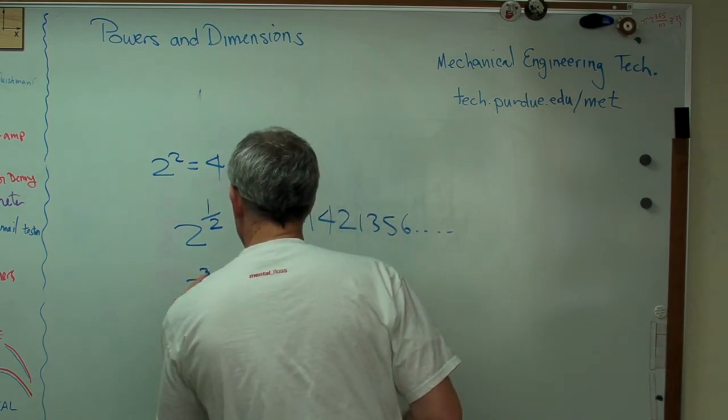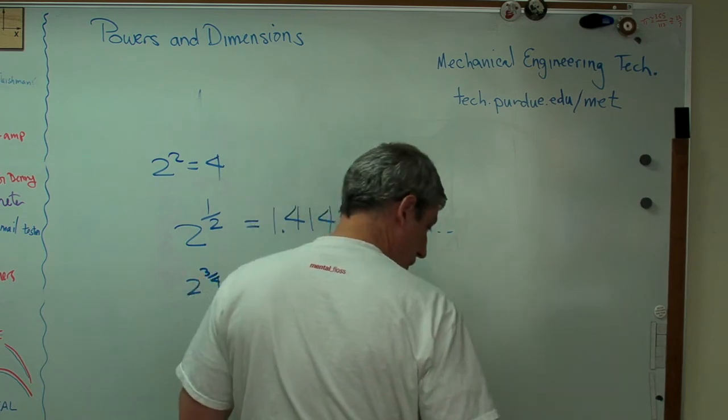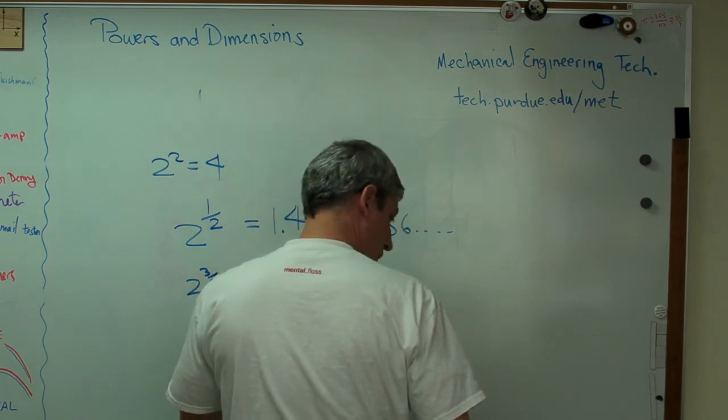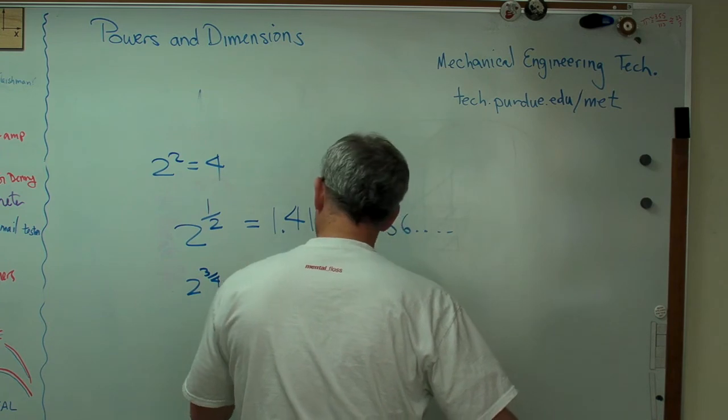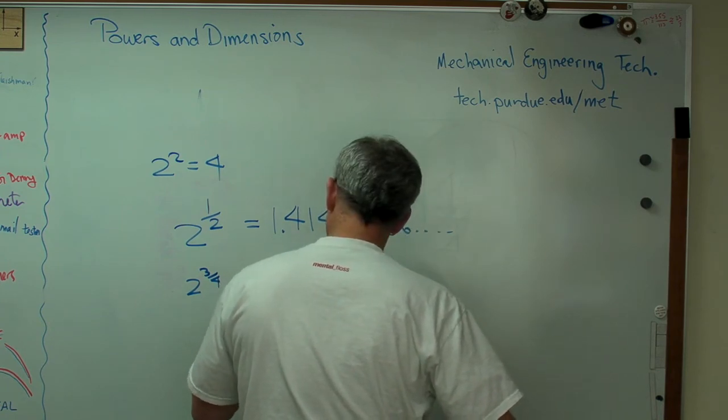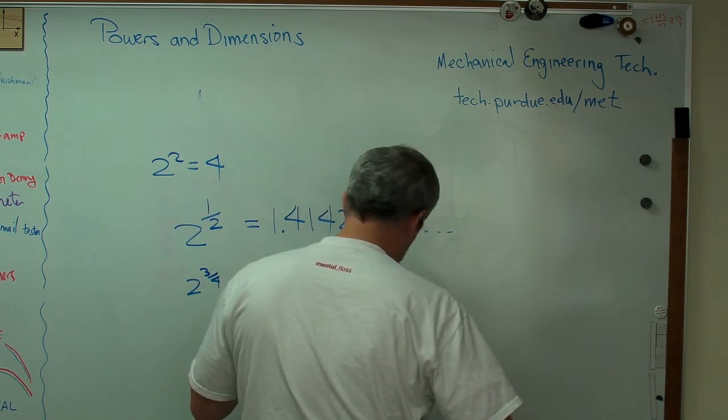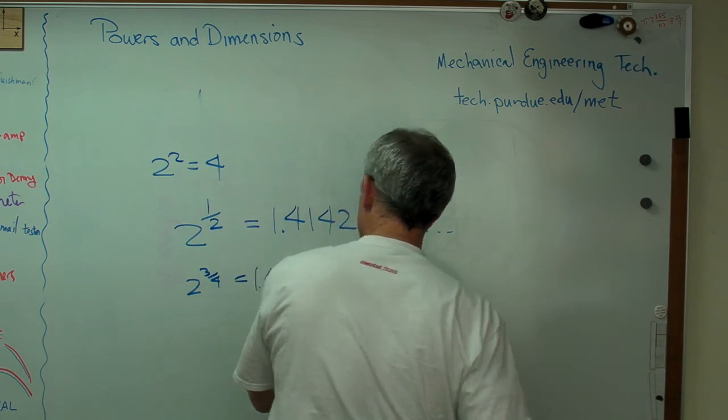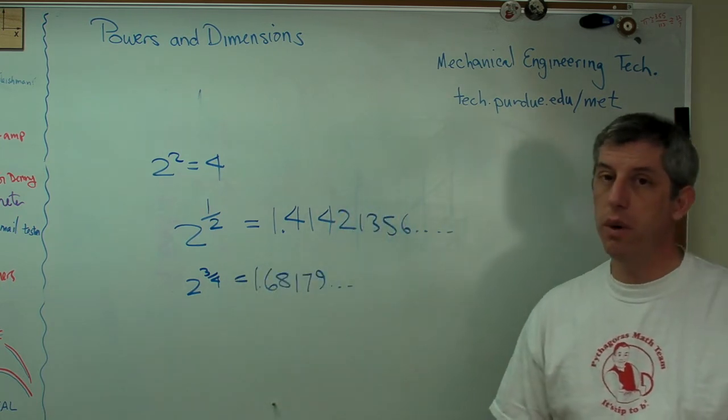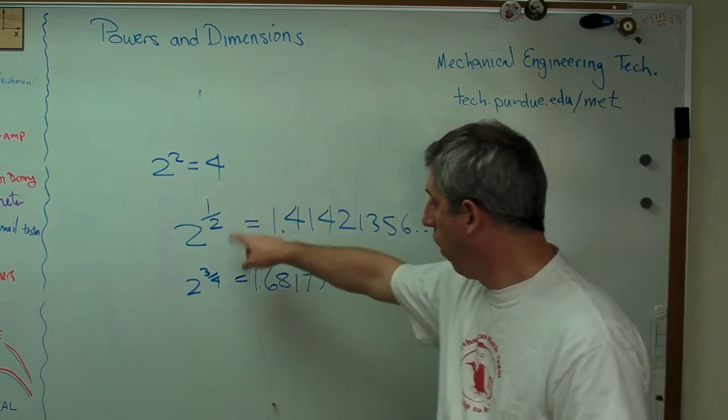What about two to the three-fourths? Well, that equals 1.6, I'm going to write it down here. 6, 1, 6, 8, 1, 7, 9, and that goes on too. So there's no reason you have to have whole powers.